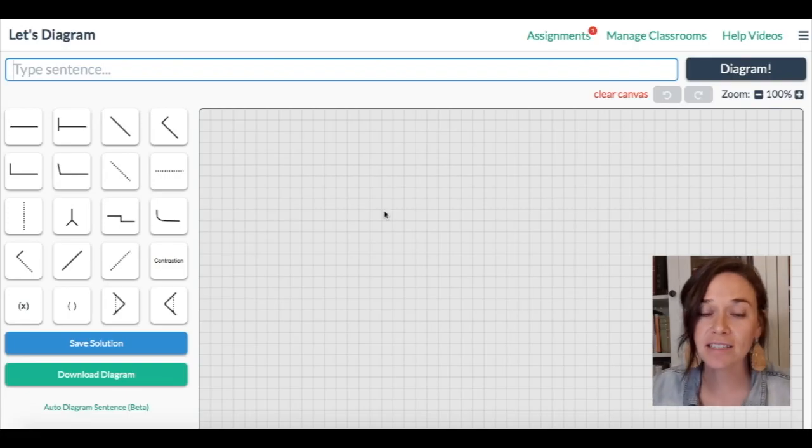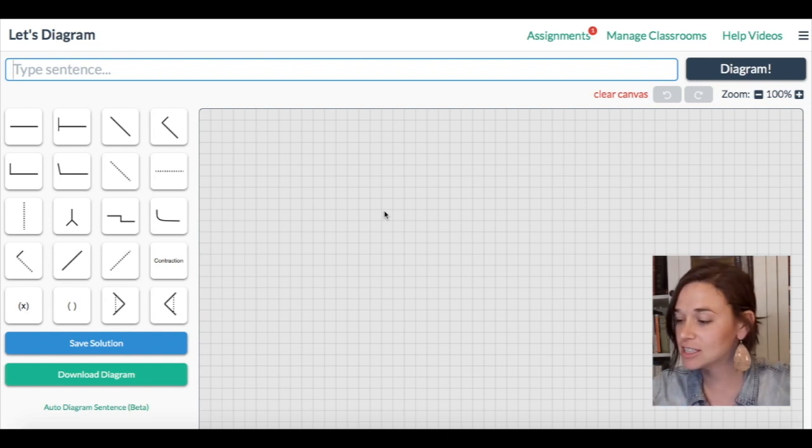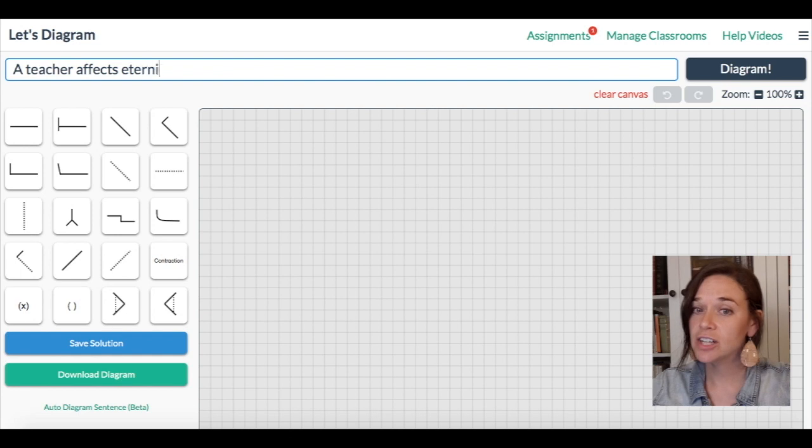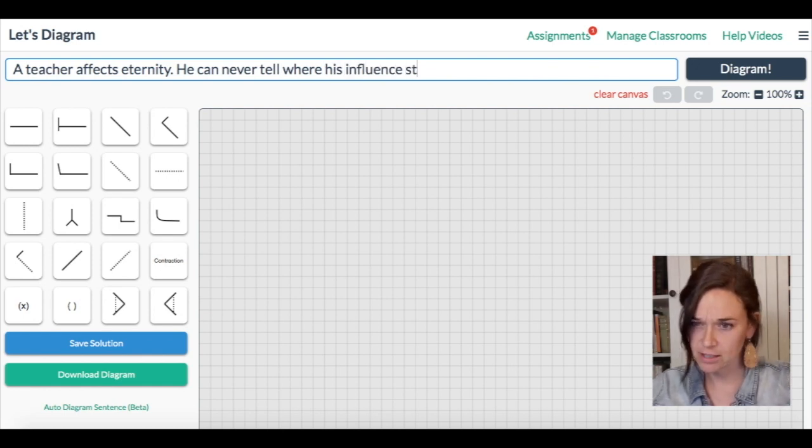Alright, so here we are back at let's diagram and I'm going to type in the sentences. A teacher affects eternity. He or she can never tell where his influence... Did I spell that right? Yes. Stops.